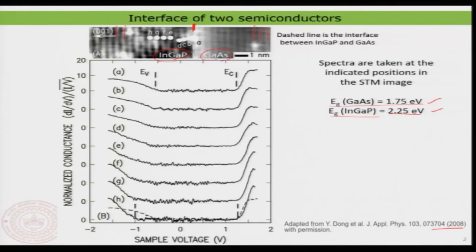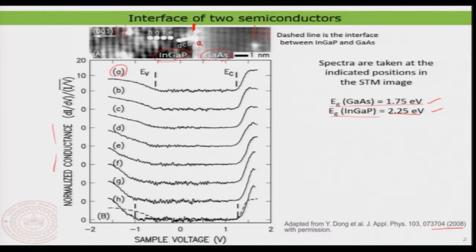This is not very old literature — 2008 — and now people do it very routinely, particularly spectroscopy. What I am showing here is dI/dV, a normalized differential conductance taken along different lattices from the interface. There are letters A, B, C, D, E, F, G, H representing the lattice lines at the interface. A is exactly the interfacial layer, and B, C, D are going more into the indium gallium phosphate region, while the other side is the gallium arsenide.